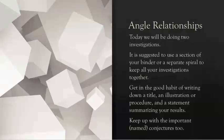But first, I want to point out that we are working on investigations from your book, and we will be coming up with conjectures. It's suggested to use a section of your binder or separate spiral to keep all of your investigations together. Most of the time, you'll be drawing things in your notebook and measuring, and it's a good habit for us to keep that all together. You could write down the title, an illustration or procedure that you've done, and a statement summarizing your results. It's also good to keep up with the important or named conjectures.